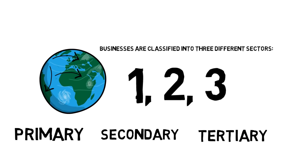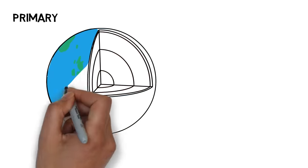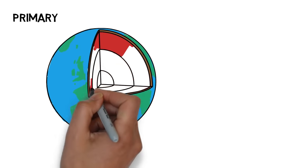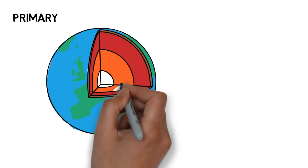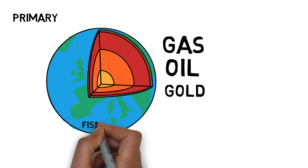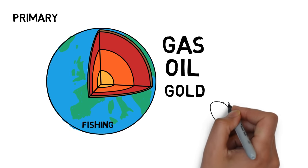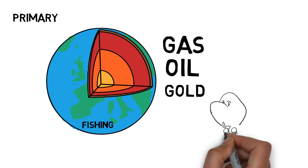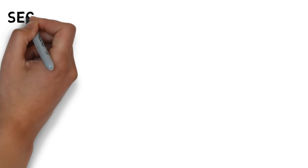Let's break each down so we understand them better. Primary is where businesses deal with raw resources of our Earth. It is the extraction of natural resources such as gas, oil, diamond, and gold. Farming and fishing are also in the Primary sector. In summary, Primary covers anything that requires extraction from the Earth.